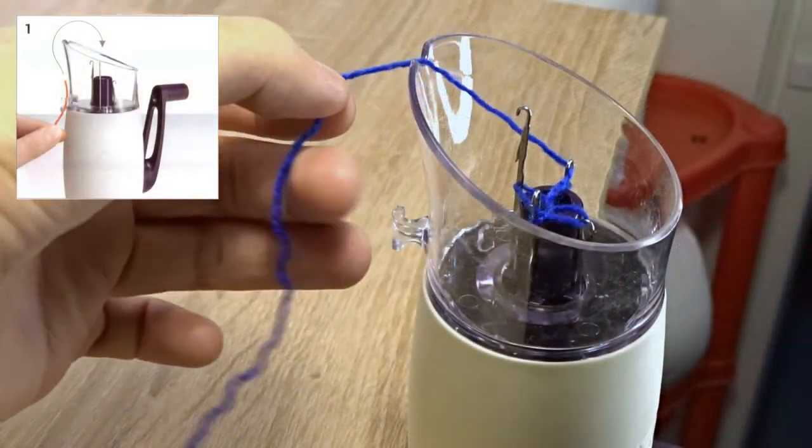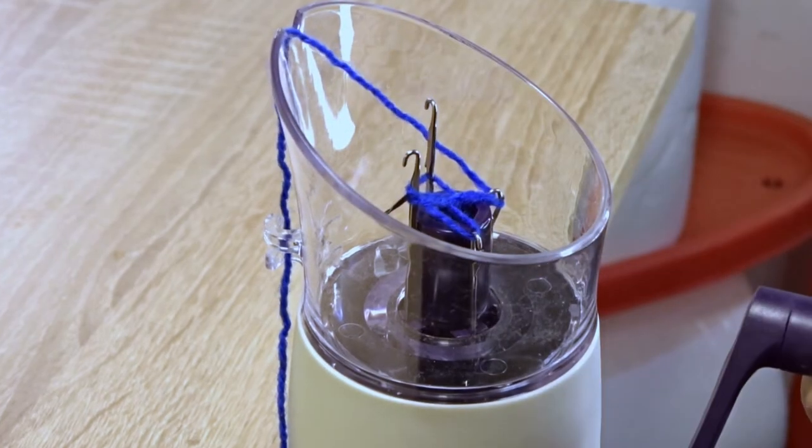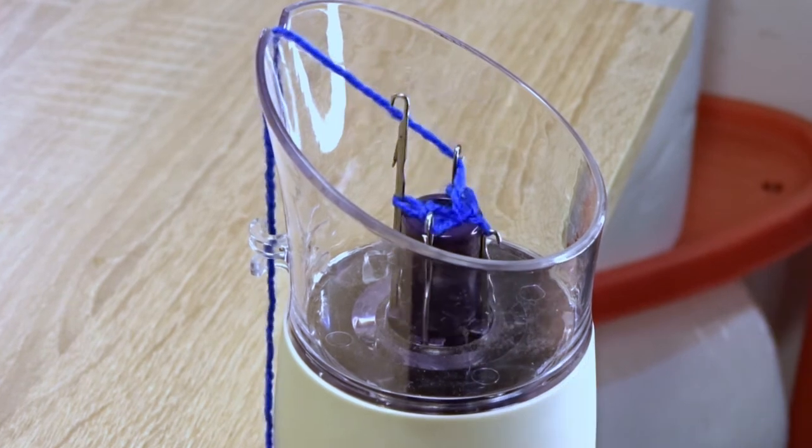Make sure the yarn is passing through the guide on the front. I will place the spool on the floor. Start rotating the handle in the same direction which you chose at the beginning.